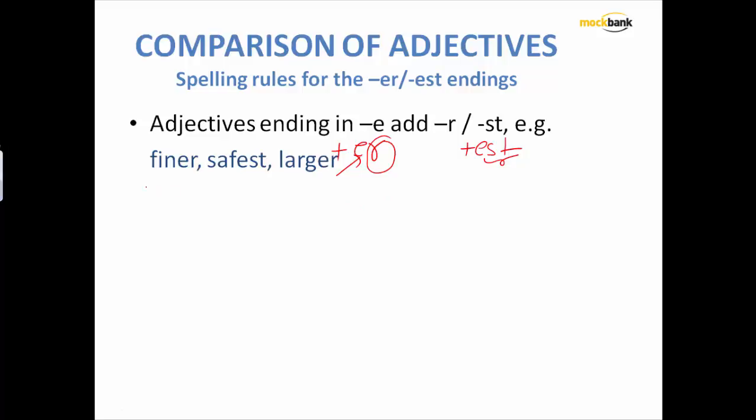I have got this word called finer. Finer has come from fine. So fine, finer, and finest. This is safe. Safe ends with 'e', and hence if you are going to make comparative degree of safe, that would be you are going to add only r, not er. So this becomes safe, safer, safest. And likewise for large, since it is ending with 'e', the comparative degree of large is larger and superlative degree is largest.